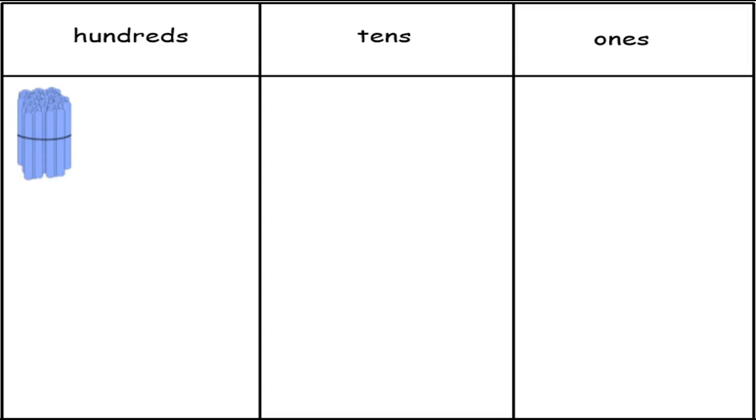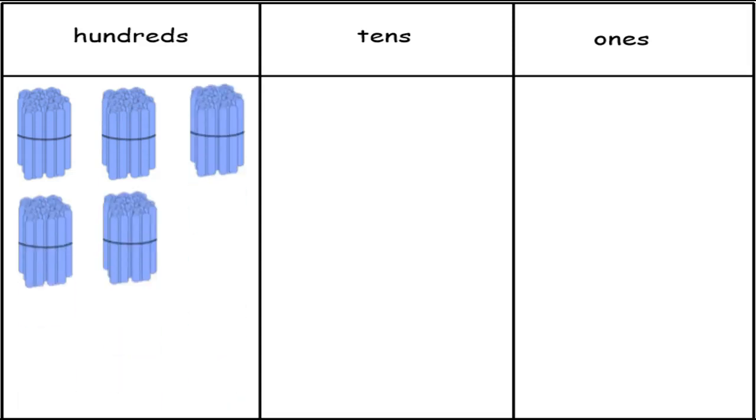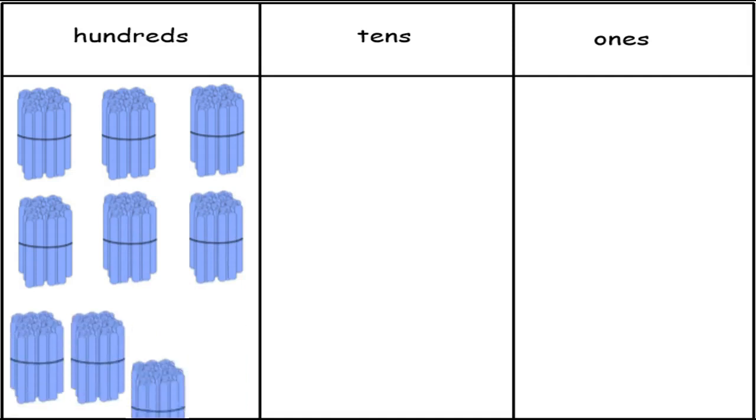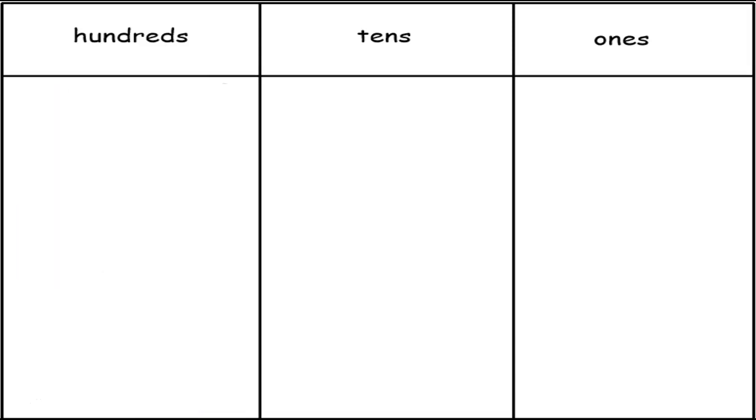Okay so now how many hundreds do we need to make a thousand? Right, we need ten hundreds to make one thousand. So let's get ten hundreds here so we can make that thousand: one hundred, two hundred, three hundred, four hundred, five hundred, six hundred, seven hundred, eight hundred, nine hundred, one thousand. Good job.